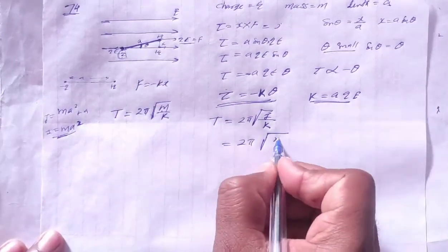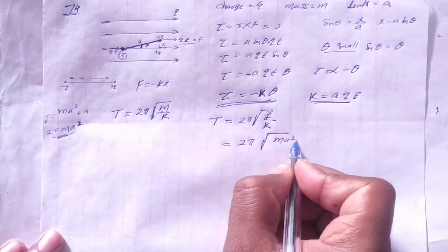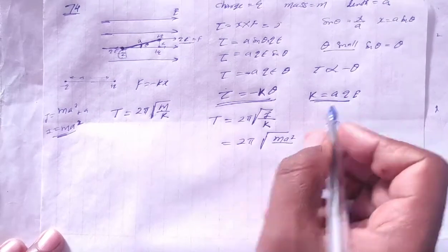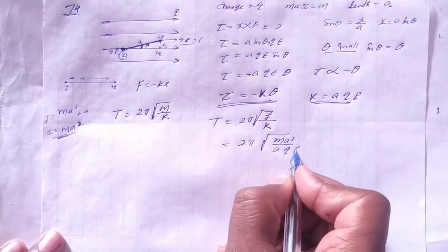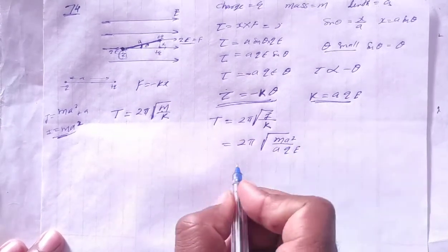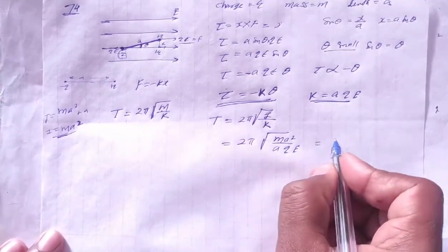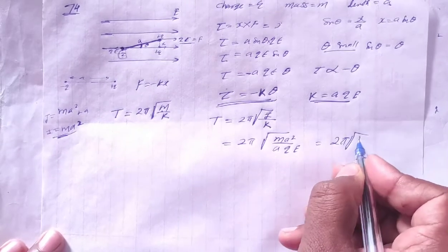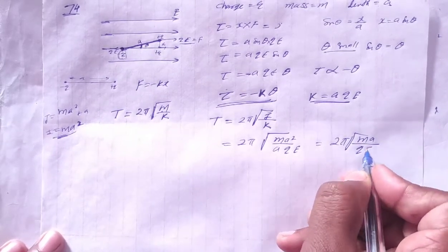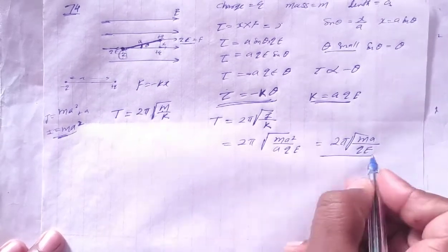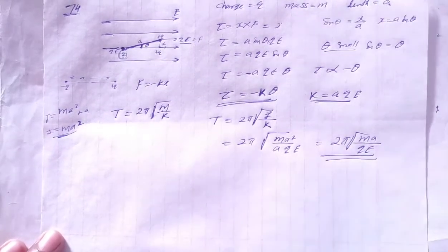So substituting I = ma² and k = AqE, the time period is T = 2π√(ma² / AqE). This is your time period.